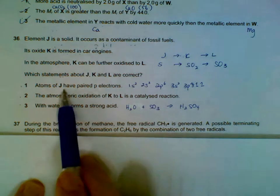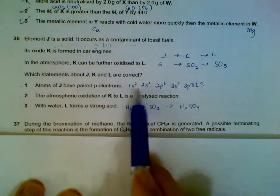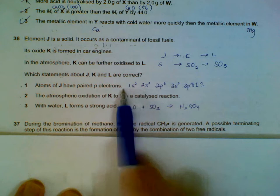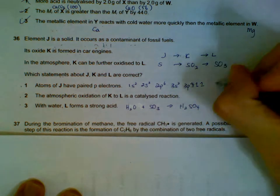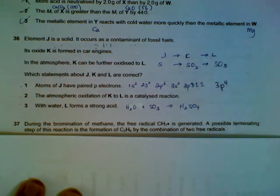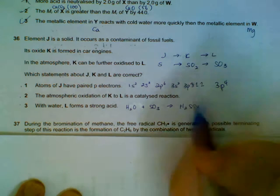So comparing J - we have p electrons. J will be sulfur: 1s2 2s2 2p6 3s2 3p4. So it does have p electrons.